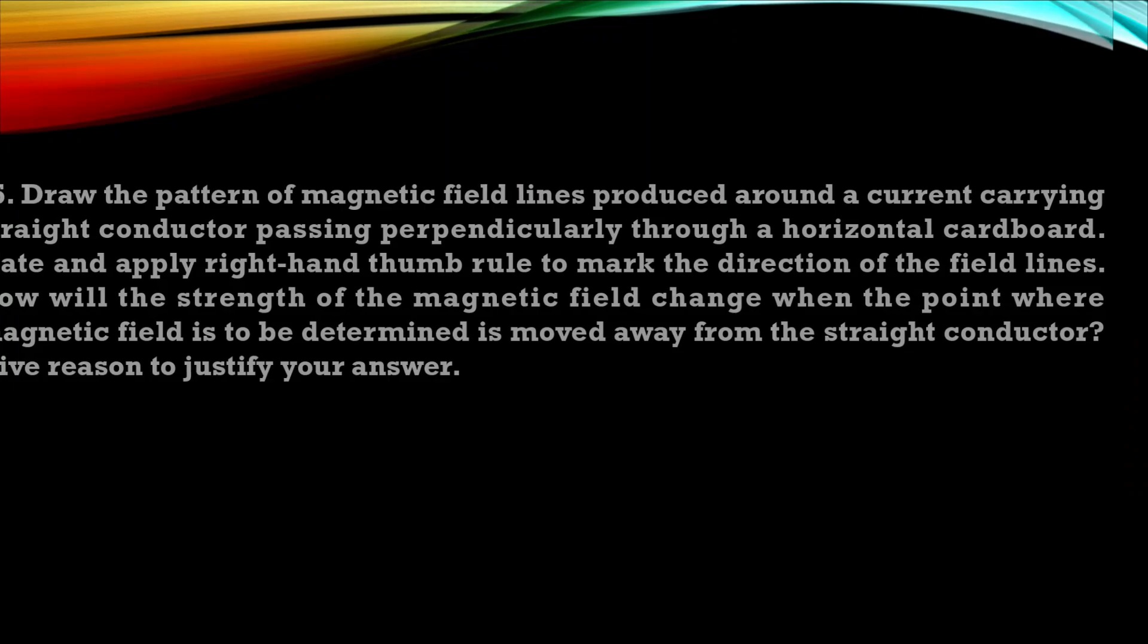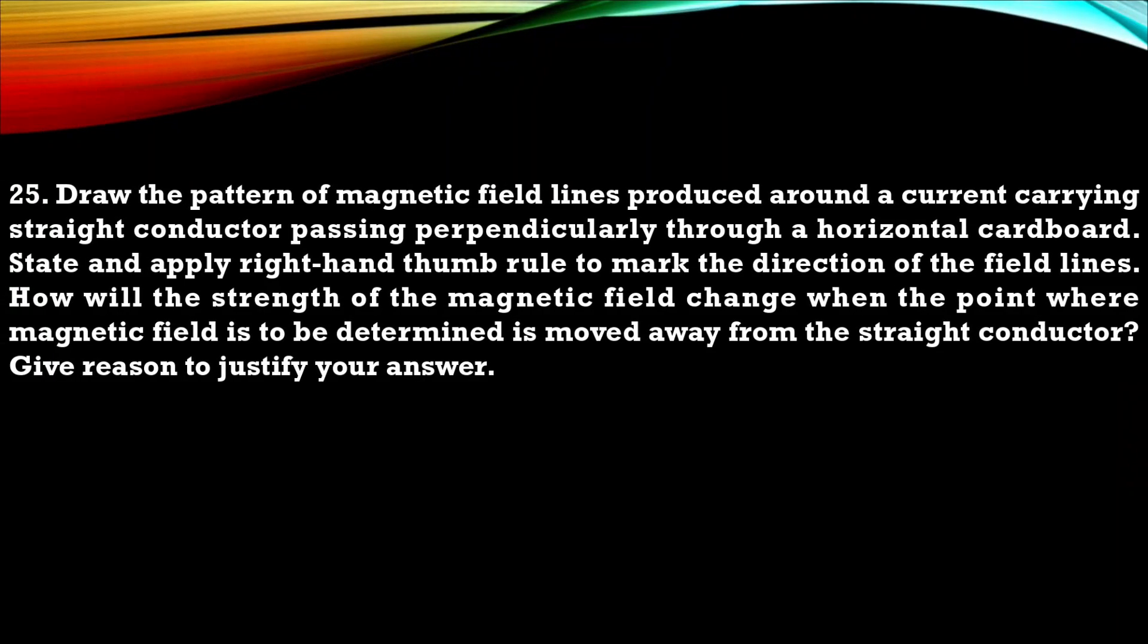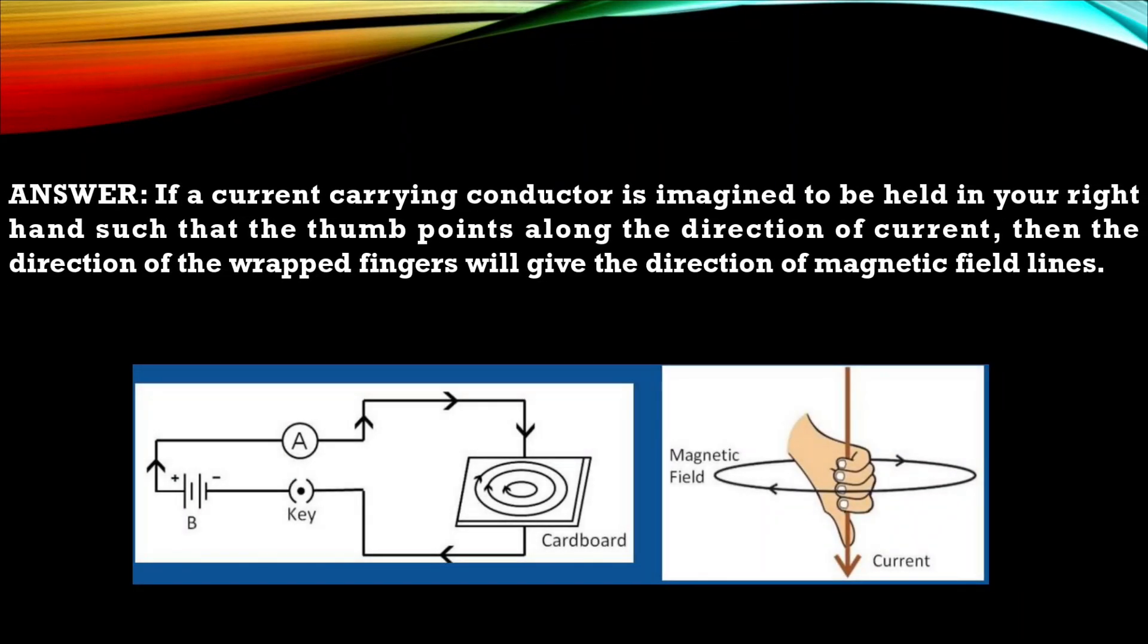Question 25. Draw the pattern of magnetic field line produced around a current carrying straight conductor passing perpendicular through a horizontal cardboard. State and apply right hand thumb rule to mark the direction of field line. How will the strength of magnetic field change when the point where magnetic field is to be determined is moved away from the straight conductor? Give reason to justify your answer. So this is your answer with a diagram. Make sure your diagram is neat and clean with all labeled point.